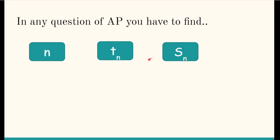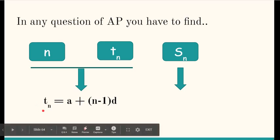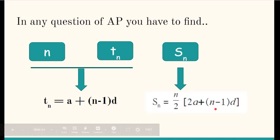In any question where we have to find N or TN, we will use the TN formula which we learned: TN = A + (N-1)D. If we have to find SN, then we will use the sum formula: SN = N/2 × [2A + (N-1)D]. Depending on what we need to find, these are the only two formulas you will use. We will understand this better by solving an example.